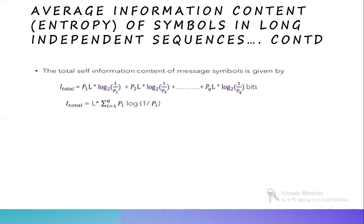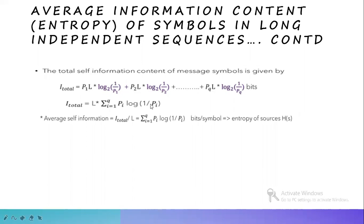Now we need to know what is average self-information. Average self-information is given by I_total divided by L. Substituting I_total, we get H(S), that is average self-information, equal to summation from i equal to 1 to Q of Pi·log(1/Pi), always to the base 2, in bits per symbol. This average self-information is also called the entropy of the source and is always denoted by H(S).